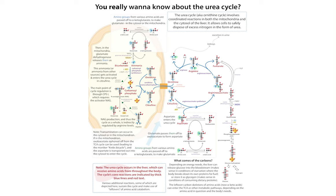Here's a quick overview of the urea cycle, a process that allows your body to dispose of nitrogen groups from amino acids safely, so that you don't have ammonia in your blood. Instead, what you do with those nitrogen groups is generate urea, which the kidneys can excrete in the urine.